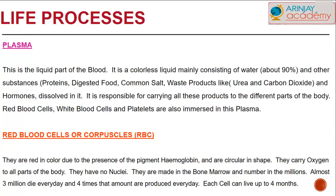RBCs, WBCs, and platelets are immersed in the plasma. The red blood cells are red due to the presence of a pigment called hemoglobin and are circular in shape. They carry oxygen to all parts of the body, have no nucleus, and are produced in the bone marrow. There are millions present in our body — three million die every day and four times that amount are produced every day. Each RBC can live up to four months.